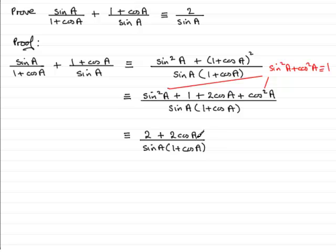Now, what are we going to do next? Well, I can see that 2 is a common factor on the top. So I can pull out 2 as a common factor and we've got 1 plus cos A, and that's all divided by sin A multiplied by 1 plus cos A.